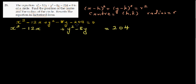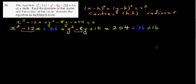Having added 204 to both sides, for completing the square we take half of each coefficient and square it. Half of negative 12 is negative 6, and negative 6 squared is 36, so we add 36 to both sides. Half of negative 8 is negative 4, and negative 4 squared is 16, so we add 16 to both sides. Both expressions are now perfect squares.